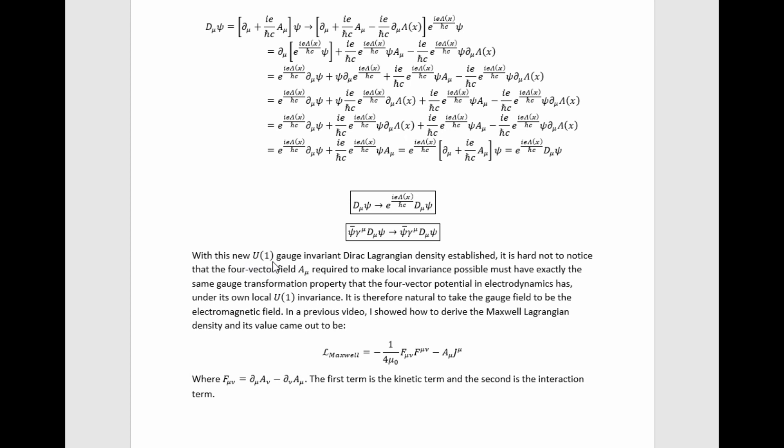With this new U1 gauge invariant Dirac Lagrangian density established, it's hard not to notice that the four-vector field A mu required to make local invariants possible must have exactly the same gauge transformation property that the four-vector potential in electrodynamics has under its own local U1 invariants. It is therefore natural to take the gauge field to be the electromagnetic field.